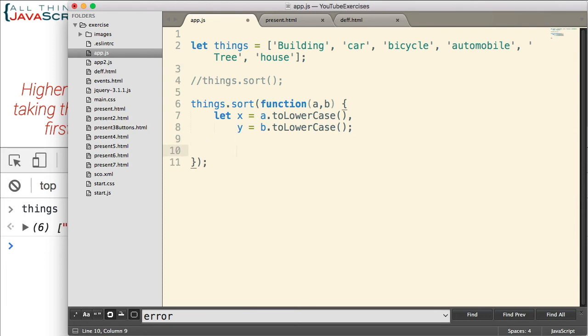So we have converted the arguments to lowercase. So we'll now use x and y to determine which should come first. So if x is less than y, we will return a negative 1.